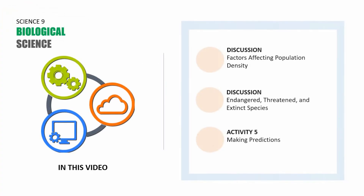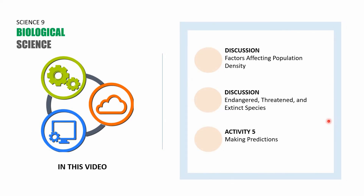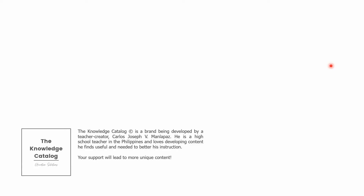This session of the Knowledge Catalog covered three parts. First, factors affecting population density — remember limiting factors, natality and mortality, and migration. Second, a discussion about endangered, threatened, and extinct species — threatened species experience a drastic drop in population, while endangered refers to a gradual decline, but both are heading toward extinction. Third, Activity 5: Making Predictions.